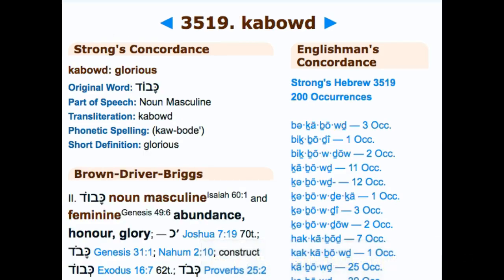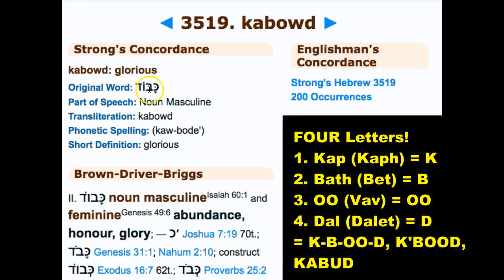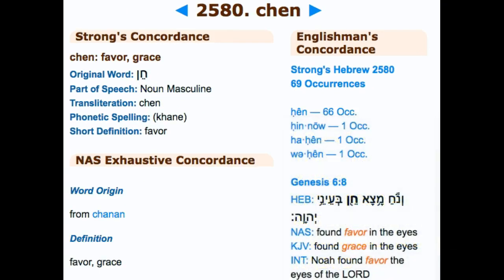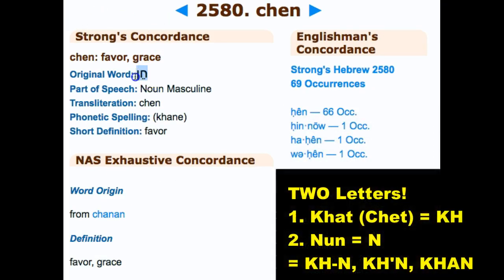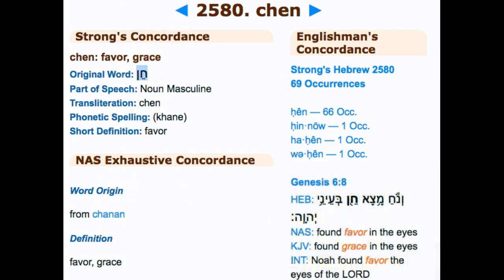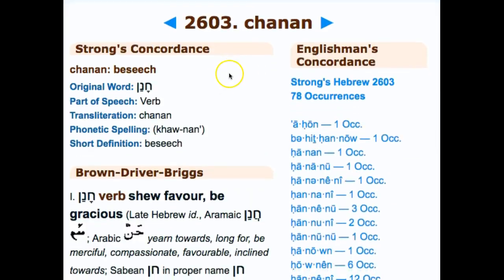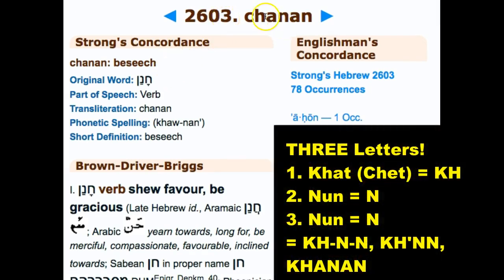Kabud means esteem, from Strong's. It has four characters: Kap-Bath-U-Dalet, giving K-B-U-D, or Kabud. Khan means favor and has only two characters of the Yahudiath alphabet — Het and Nun — making the K or CH sound and the N sound, giving Khan. Adding an additional Nun to get three characters gives Kanan, from Strong's H2603, meaning to beseech — K-N-N, pronounced Kanan.